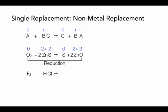Our sulfur has gone from a 2 negative to a zero oxidation state. That means the reduction is with the oxygen, because it has gained electrons, and the oxidation is with the sulfur, because it has lost electrons.